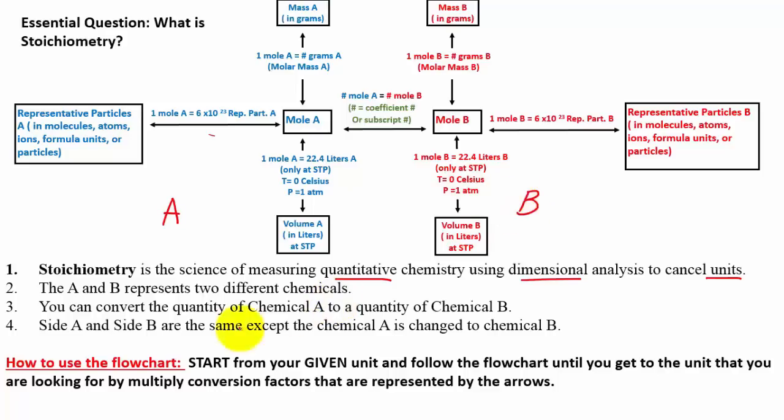The A and B represent two different chemicals. For instance, we have water itself, H2O, has two different chemicals in it. We have hydrogen and oxygen, or it could just be one chemical if we are just looking at water by itself.